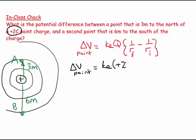Then this is one over—this is my final position—I'm 6 meters away. I don't care which direction it is in. It does not matter which direction it is in. All that matters is how far it is away from the point charge—minus one over my initial, which is one over 3.